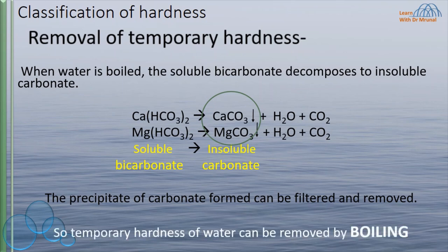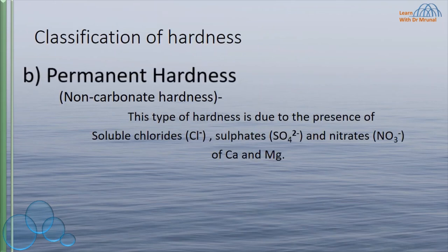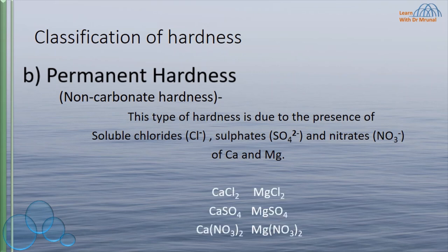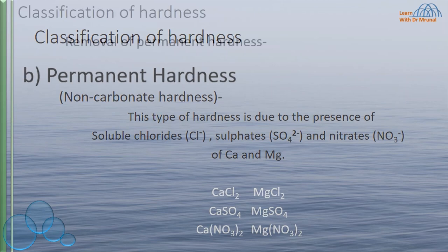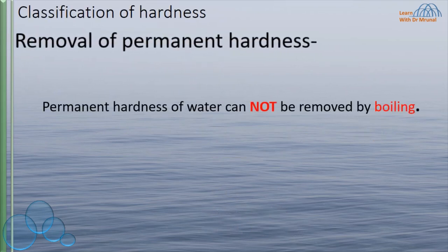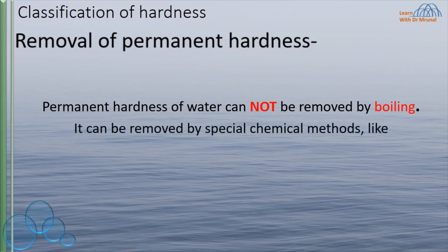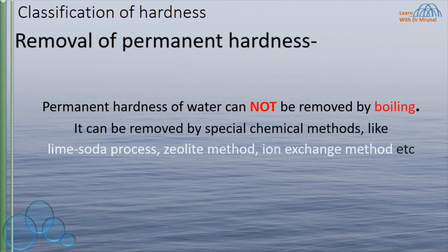Temporary hardness of water can be removed by boiling. The second type is permanent hardness, also called non-carbonate hardness. This type is due to the presence of soluble chlorides, sulfates, and nitrates of calcium and magnesium. Permanent hardness cannot be removed by boiling; it can be removed by special chemical methods like the lime soda process, zeolite method, ion exchange method, etc.